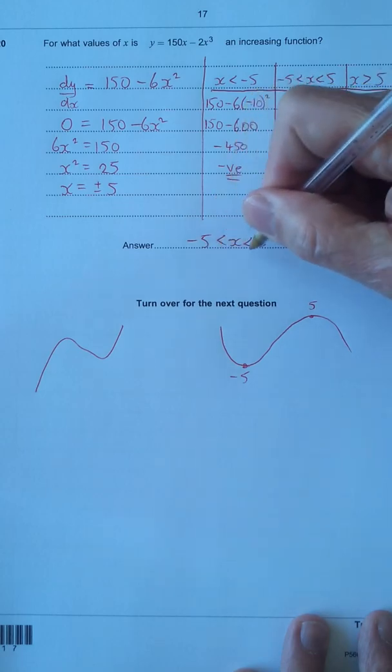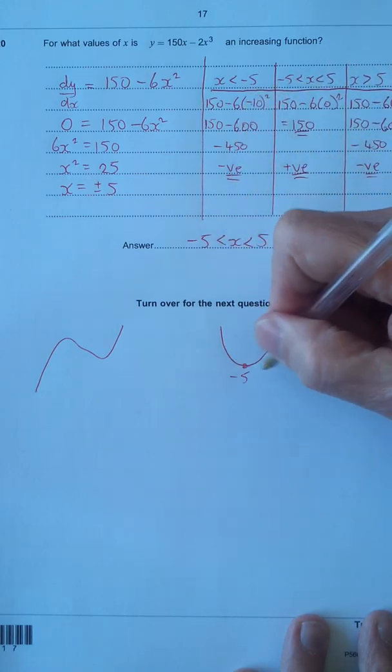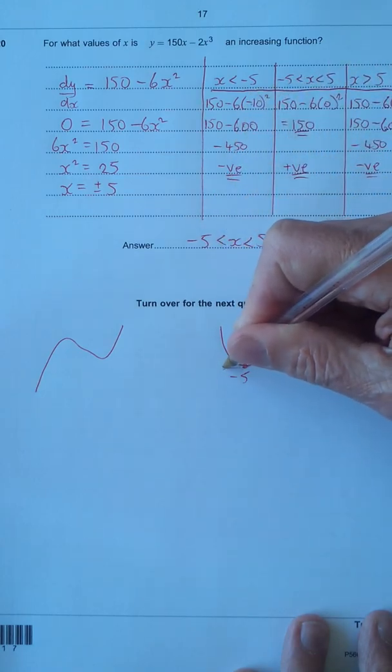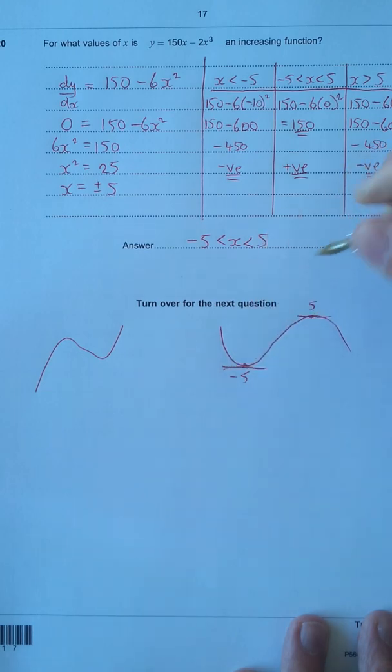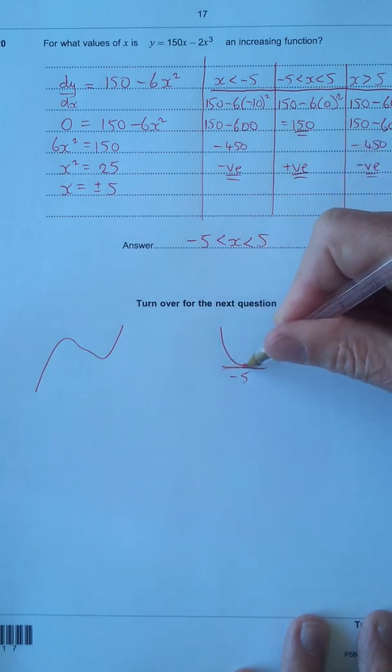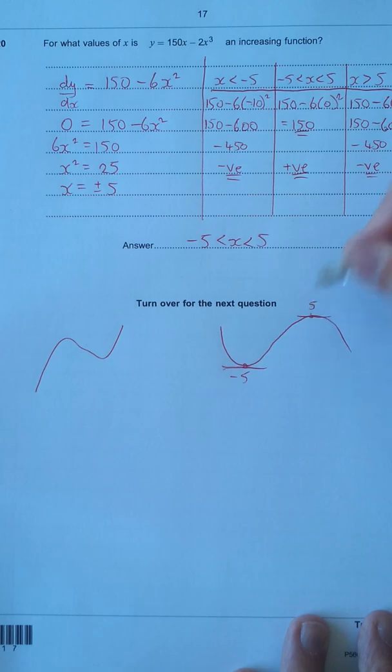Remember, you don't put an equals with the inequality, because equals would mean it's horizontal. So it's greater than that value and less than that value, so you don't put the equals there. That's it.